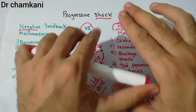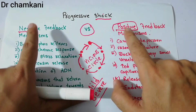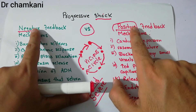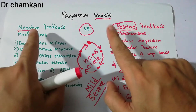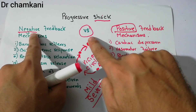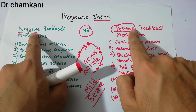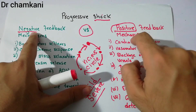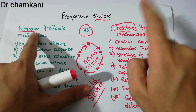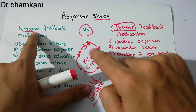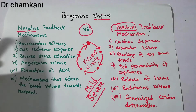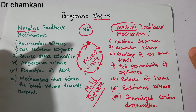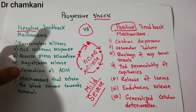In the end, the progression of shock ultimately depends on the tug of war between the negative and positive feedback mechanisms. Whichever side is stronger will win — if the positive side is stronger, the patient enters the vicious cycle and dies; if the negative side is stronger, the patient recovers. That's all about progressive shock. In the next lecture we will discuss the irreversible shock. Thanks for watching.